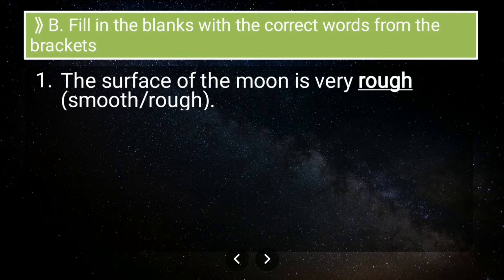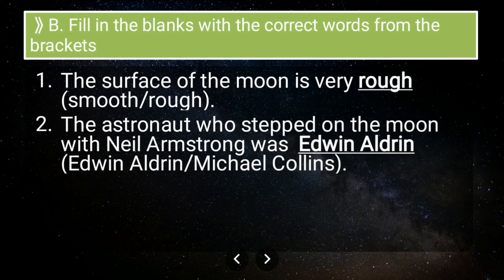Second fill-in-the-blank: the astronaut who stepped on the Moon with Neil Armstrong was — Edwin Aldrin or Michael Collins? The answer is Edwin Aldrin. He was the one who stepped on the Moon along with Neil Armstrong. Michael Collins was part of the team but stayed in the spacecraft to communicate with Earth.